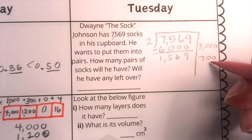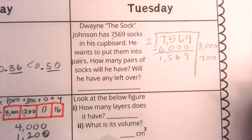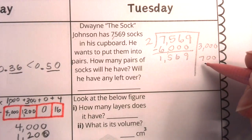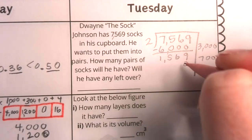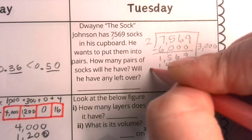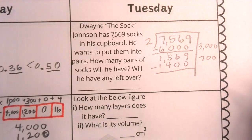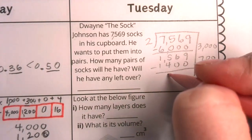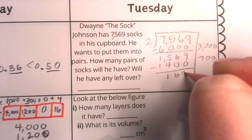If I have 700 pairs of socks, that's 700 times 2. Well, remember that basic fact with zero trick. 2 times 7 is 14, and then there are two zeros outside that basic fact. So that's going to use up a lot of socks. Here, I have a difference of 169.